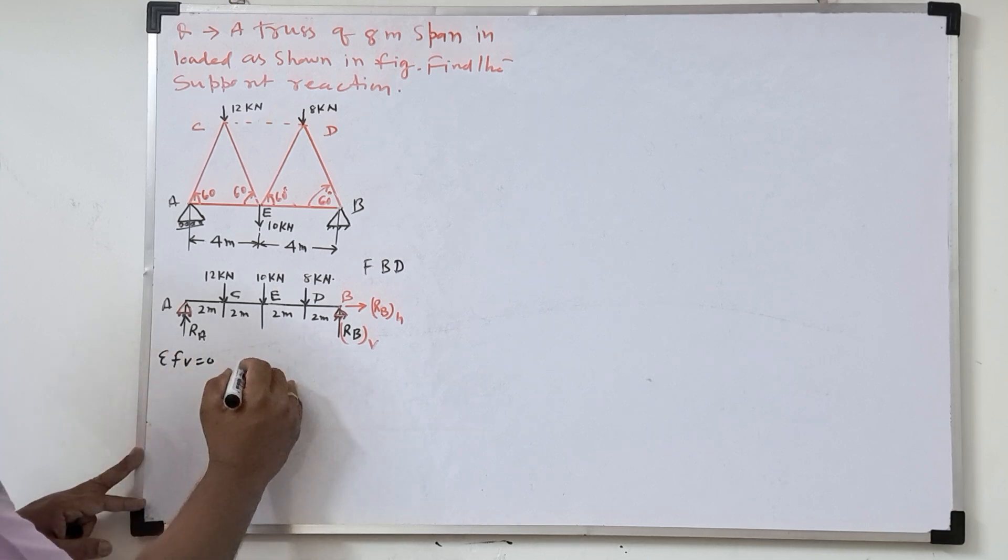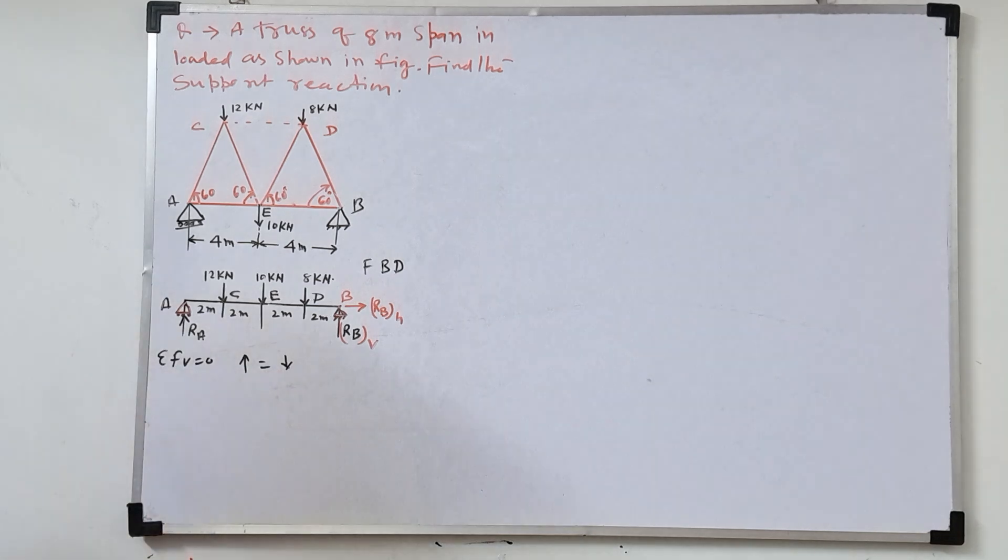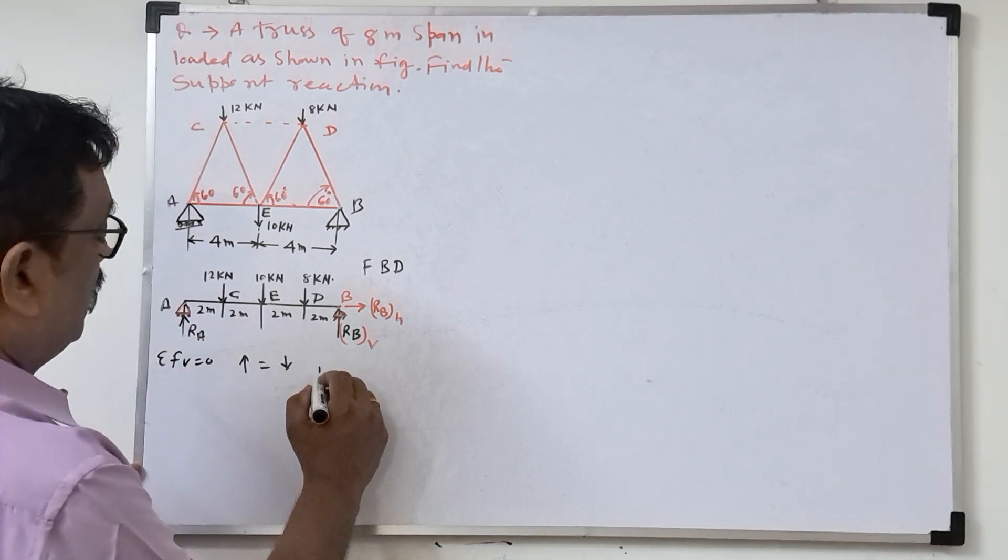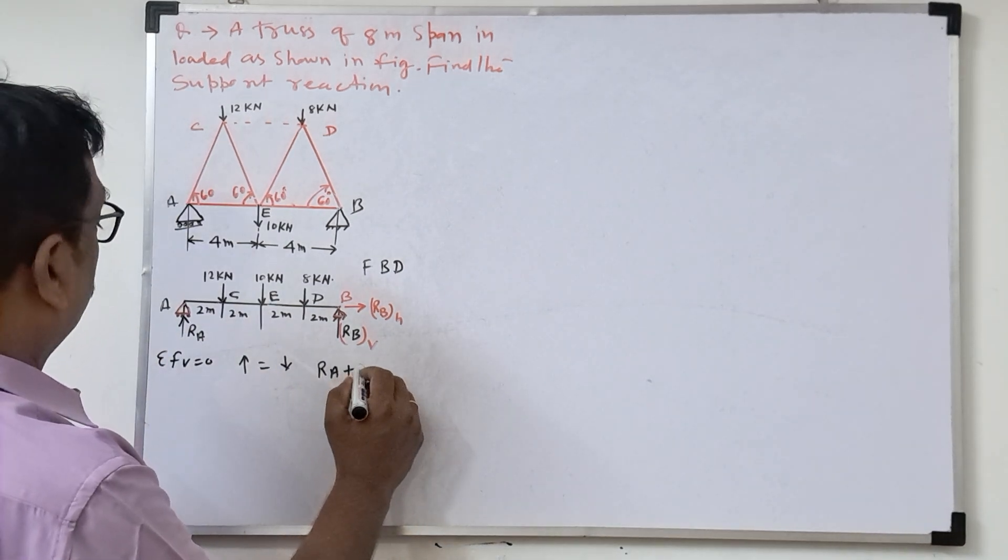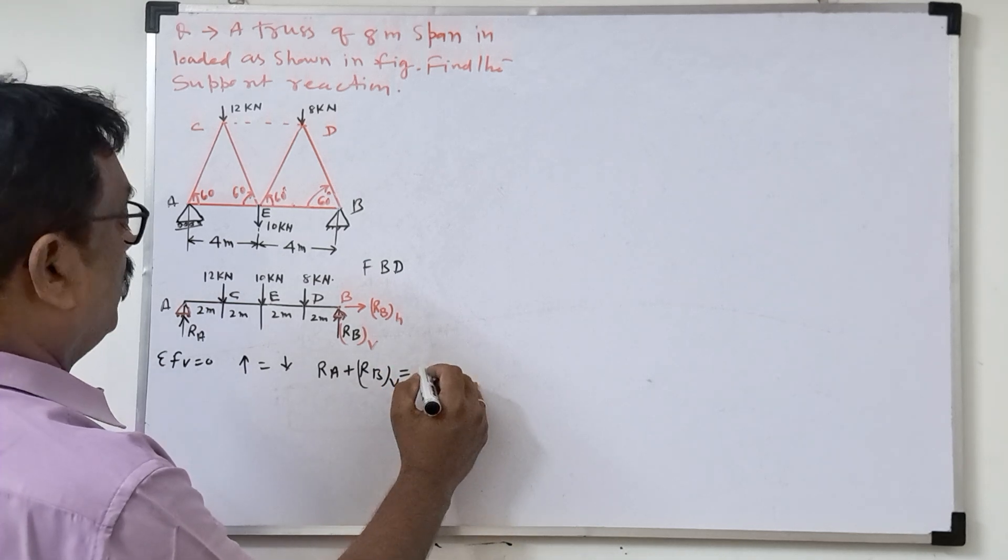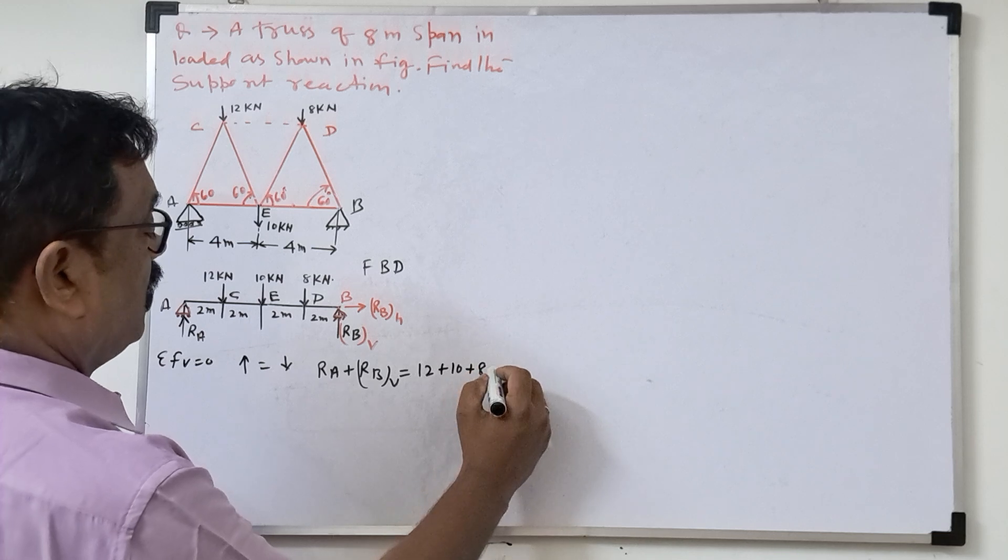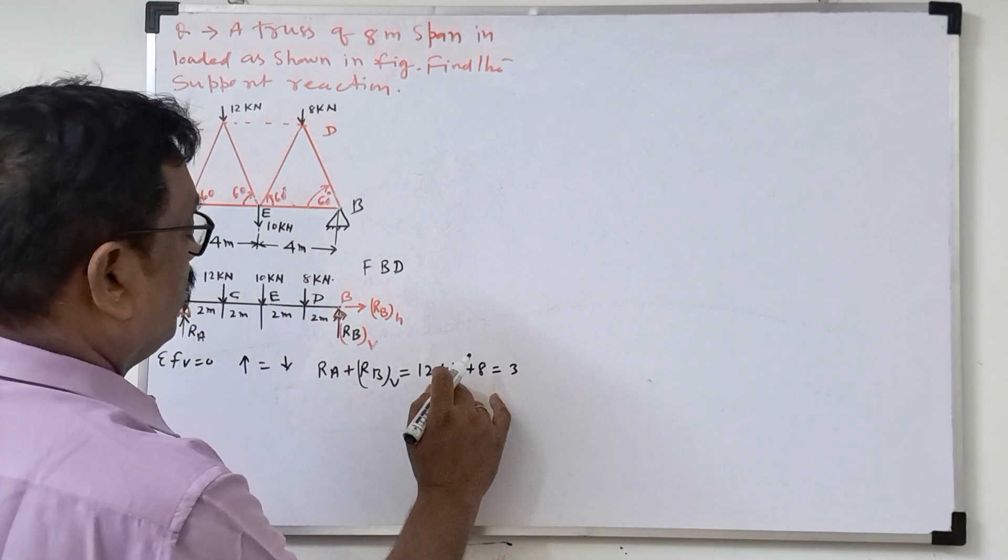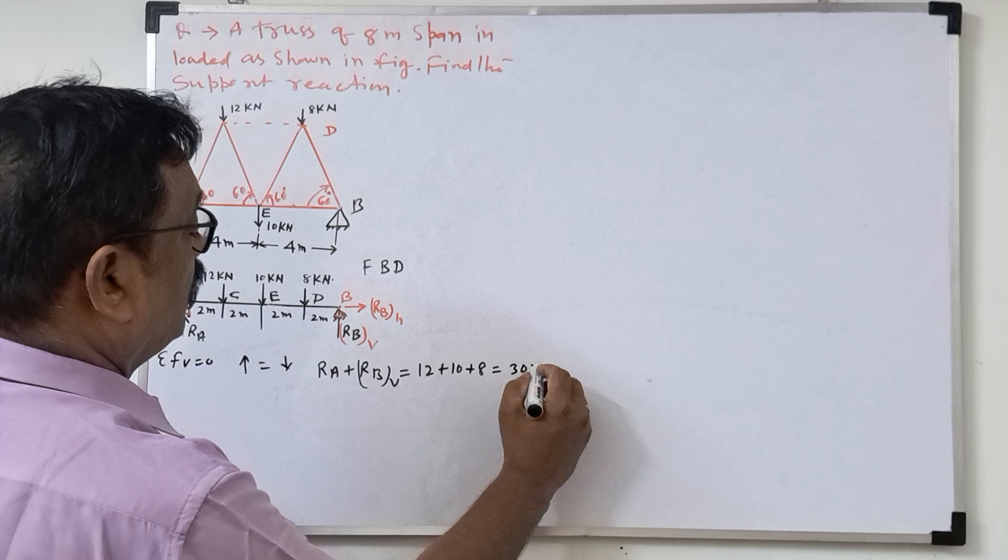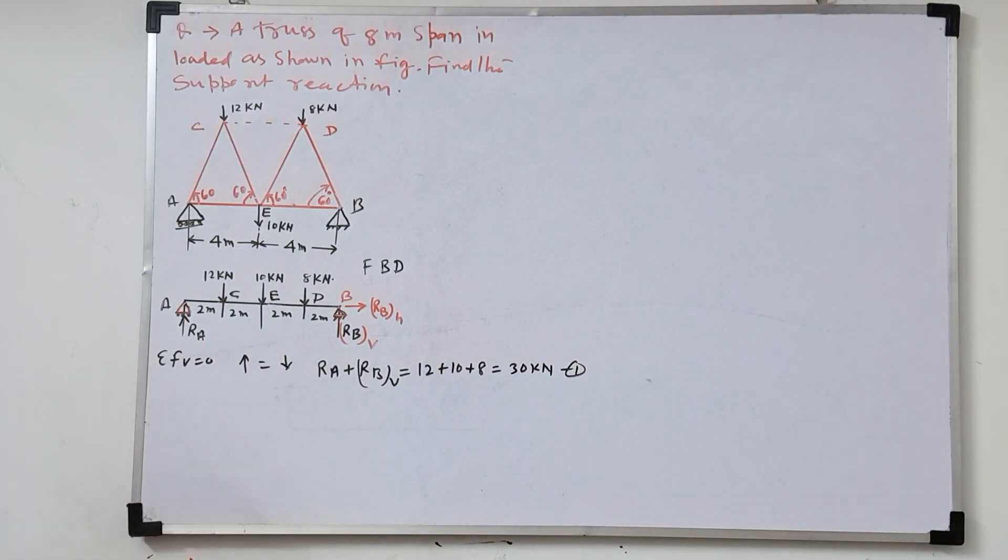Sigma FV equal to 0. So that means already we're taking always total upward force equal to total downward force. So upward force, what is here? RA plus RBV vertical is equal to 12 plus 10 plus 8. So how much is coming? 30 kilonewton. So give the equations number one.